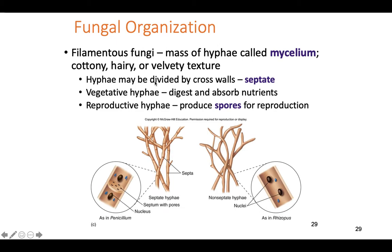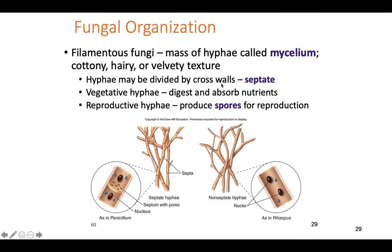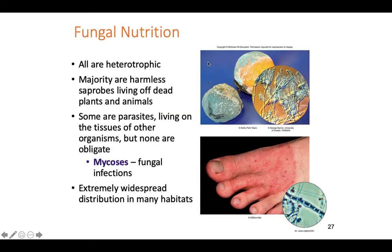Filamentous hyphae — the blob of hyphae is essentially like a big blob of roots, called a mycelium, the big fungus mat. All the individual hyphae are microscopic, but the big blob of green is the mycelium — all the hyphae collectively growing together. It gives things a cotton-like hairy texture or velvety texture, and that's what you're looking at is the mycelium.